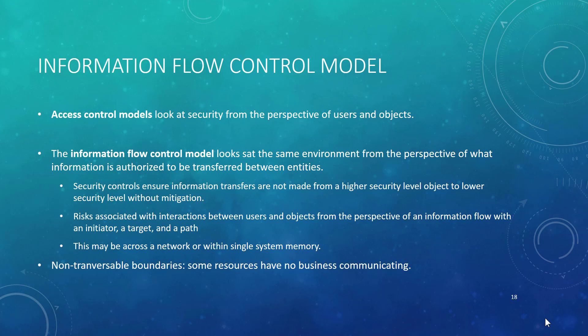Information flow control models do it a different way. They look at the information itself and whether it is authorized to be transferred between different entities — so no differentiation between users and objects. Instead, it's all about the information, and you're going to make sure that information transfers are not made from a higher security object to a lower security object without some level of mitigation.